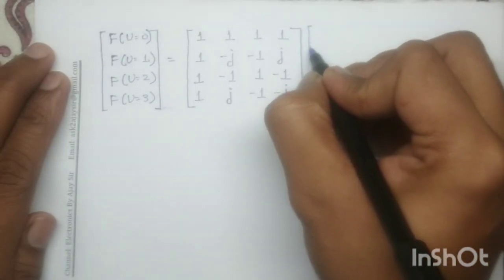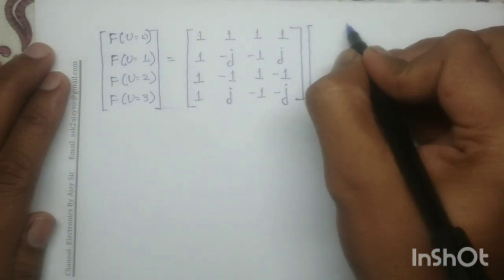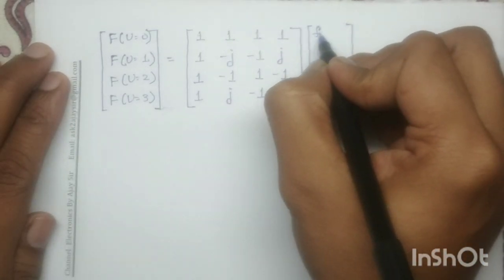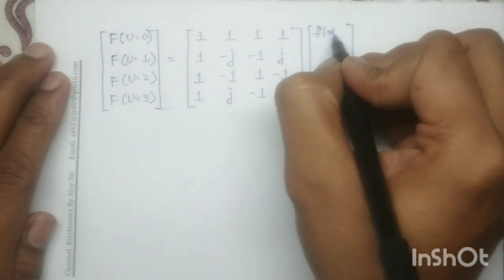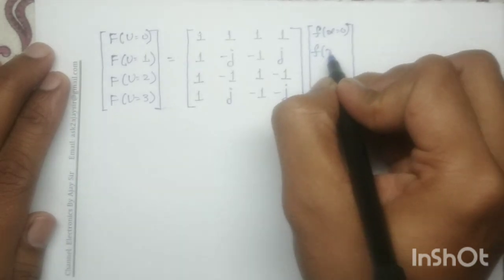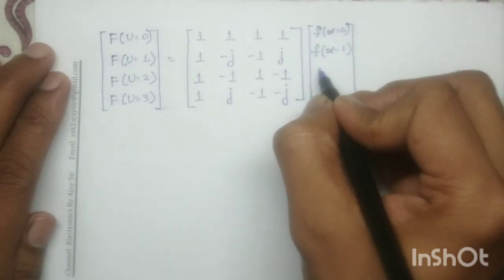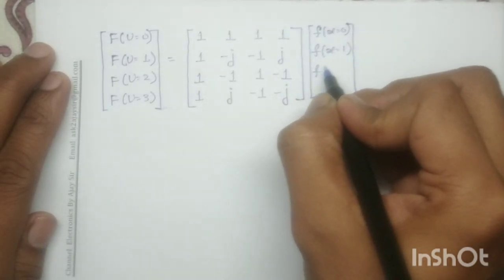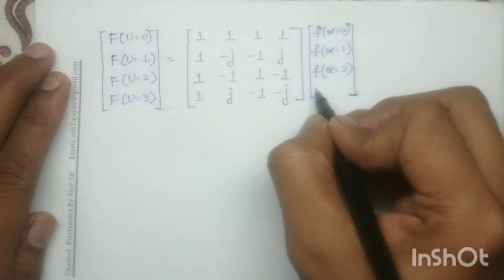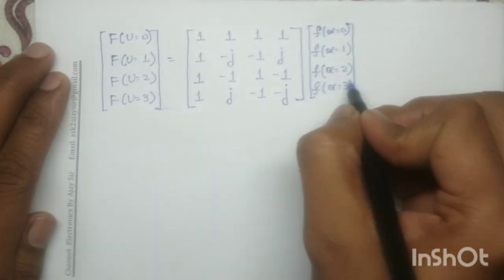This is multiplied with the given input signal column vector: f(x=0), f(x=1), f(x=2), and f(x=3).